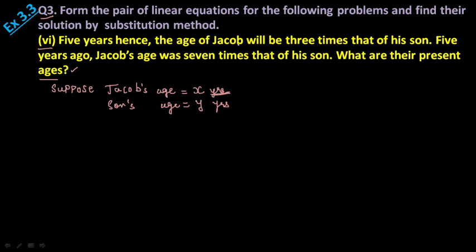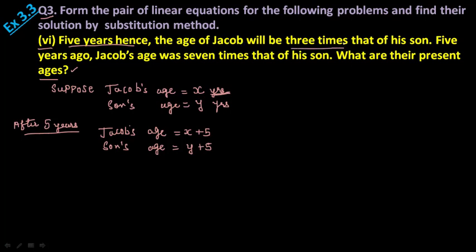Now there are 2 conditions. 5 years hence, so after 5 years, Jacob's age will be equals to x plus 5 and son's age will be equals to y plus 5.